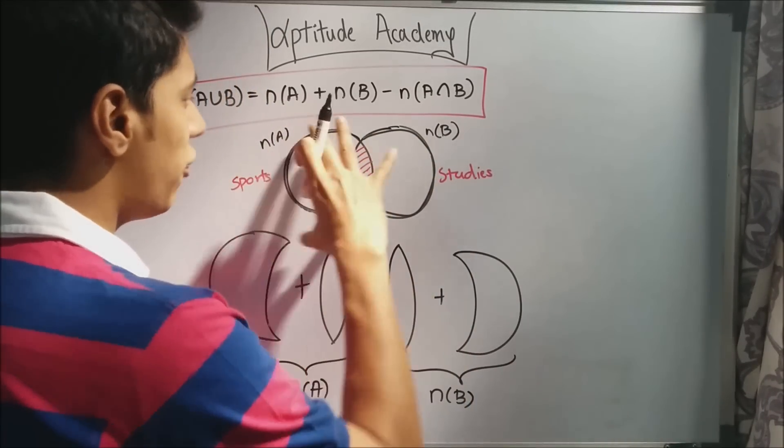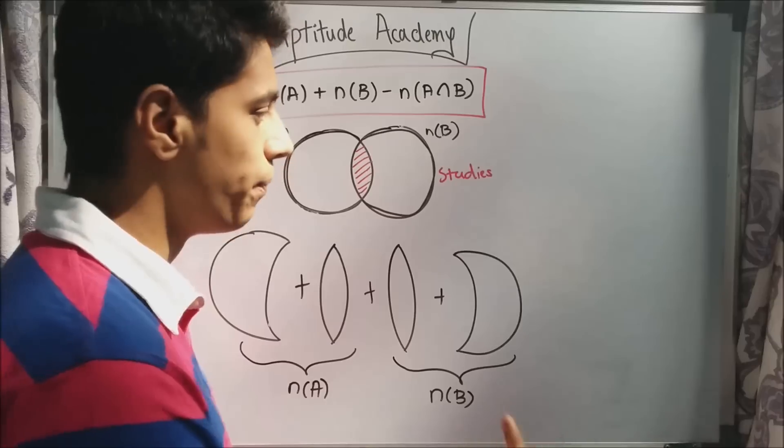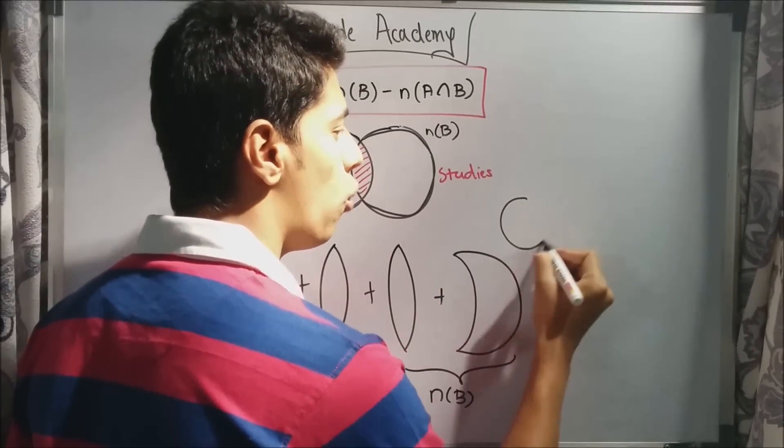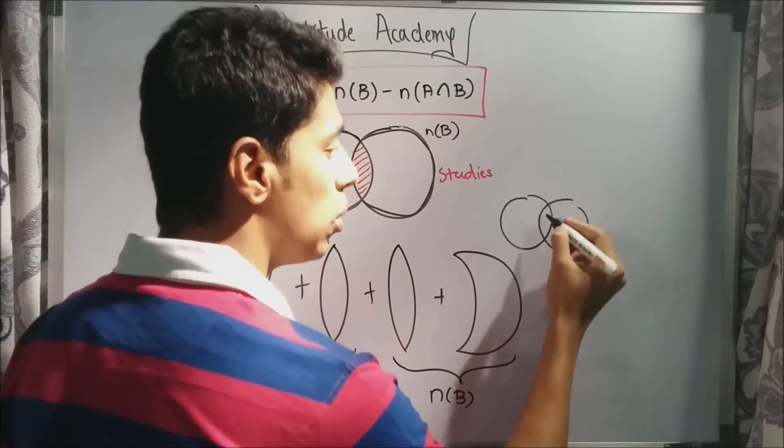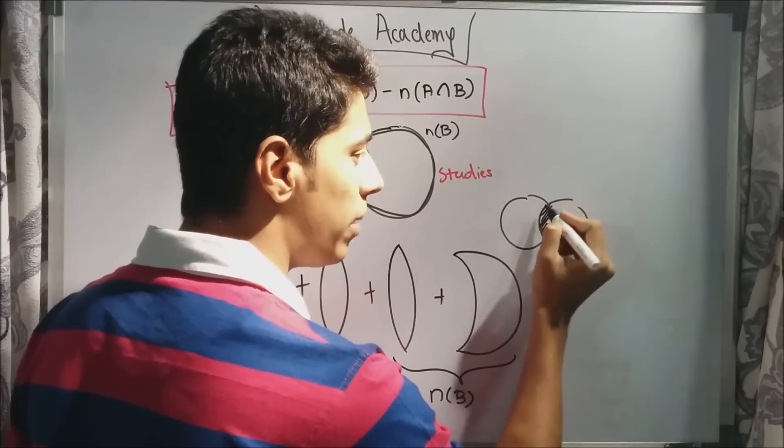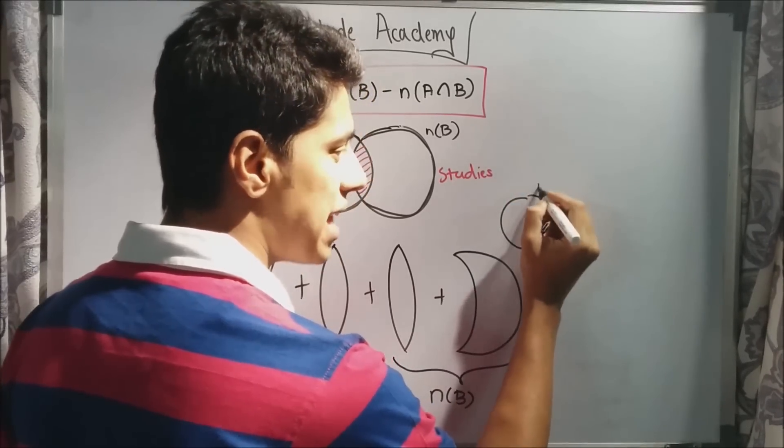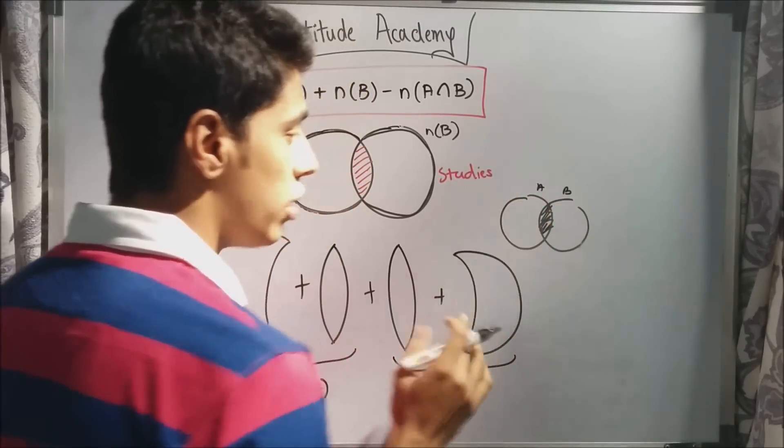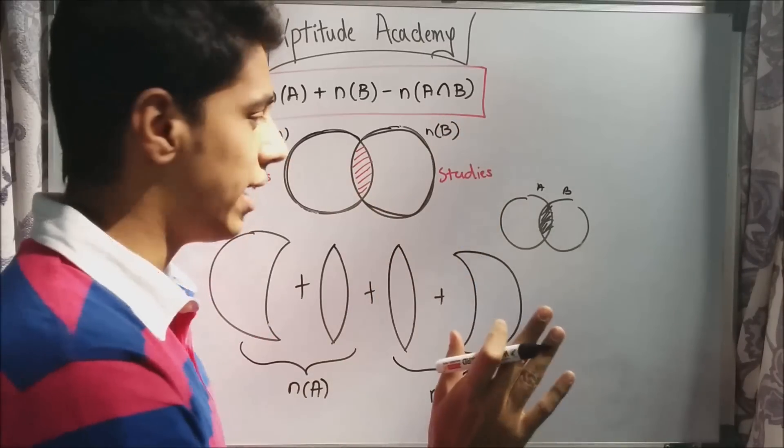You would normally say that it's n(A) plus n(B). That's wrong. Think of it this way. If you are overlapping two circles, you will have this one side of the B circle, and underneath that, you will have this side of the A circle. So, you will have two overlapping faces. But we don't require that. We just need one of them.